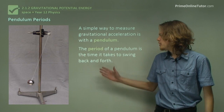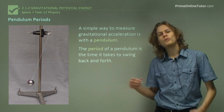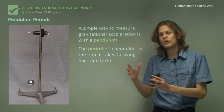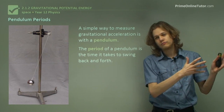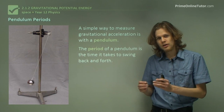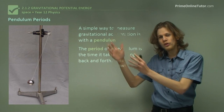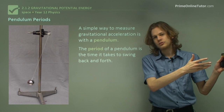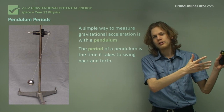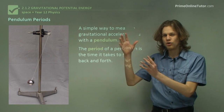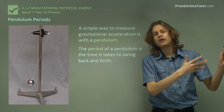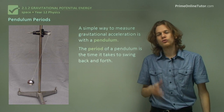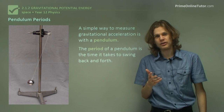The period of a pendulum is what we call the time it takes for the pendulum to swing back and forth — not just from one end to the other end of its swing, but to go all the way there and all the way back. That's one period.